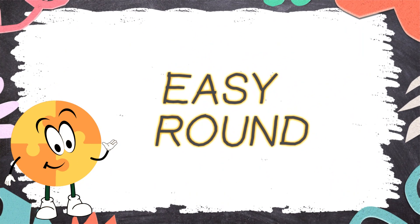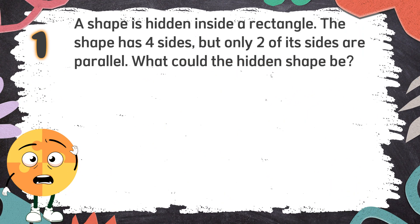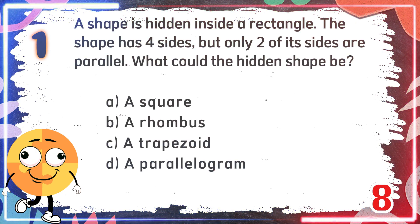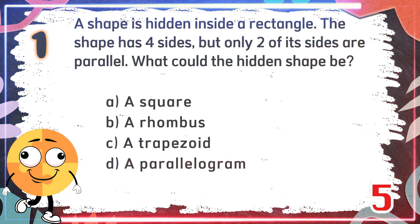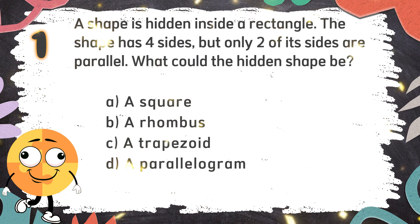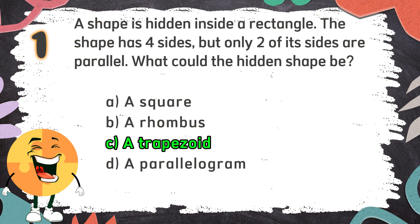Easy Round. Number 1: A shape is hidden inside a rectangle. The shape has four sides, but only two of its sides are parallel. What could the hidden shape be? The choices are: A. A square, B. A rhombus, C. A trapezoid, D. A parallelogram. The correct answer is C, a trapezoid.